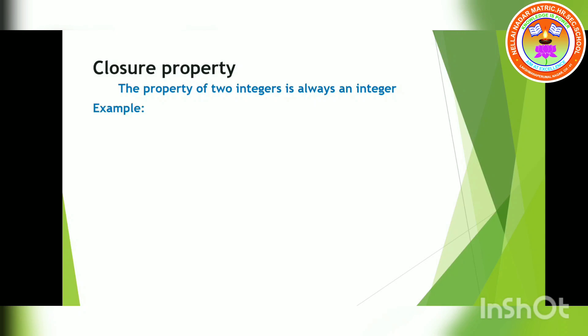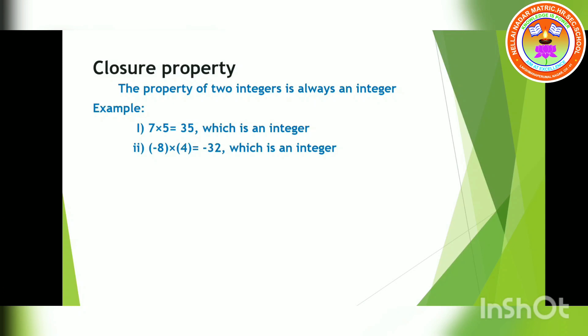We will move on to examples for a clearer picture. First example: taking positive integers 7 and 5 — both plus. Seven into five gives 35, which is positive, so it is an integer. Next, taking minus 8 into 4: eight fours are 32, but there is a minus symbol, so according to rule 2 with unlike symbols, it becomes minus 32. Minus 32 is also an integer.